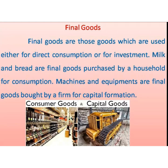Consumer goods are those which are directly used for consumption — they directly satisfy the wants of consumers. Capital goods include all types of machines and equipment, which are final goods bought by a firm for capital formation.